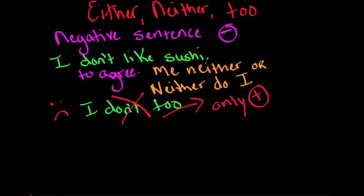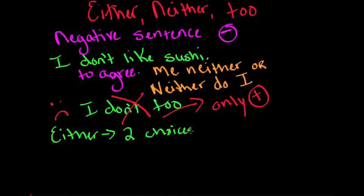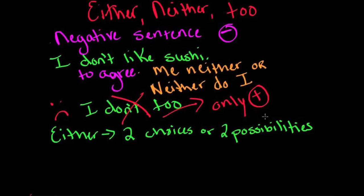Now what's the difference between either and neither? So the difference between either and neither is that either is for two choices or two possibilities.